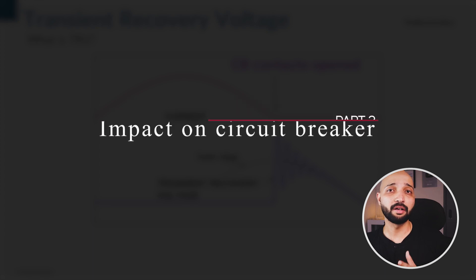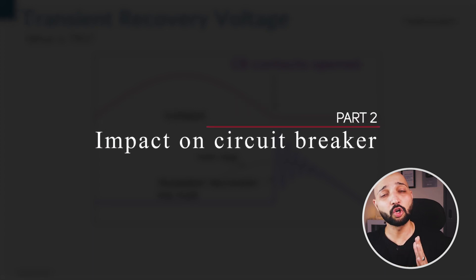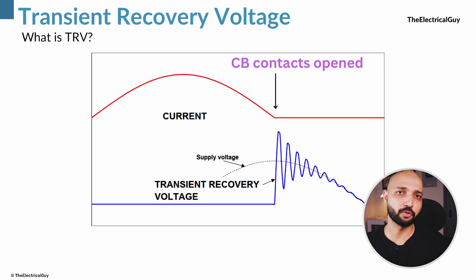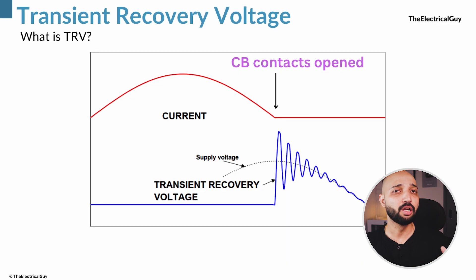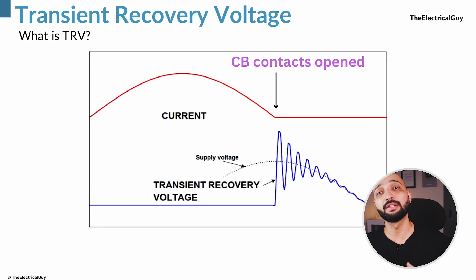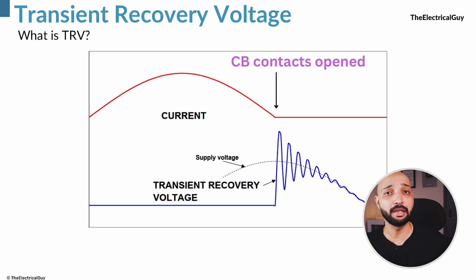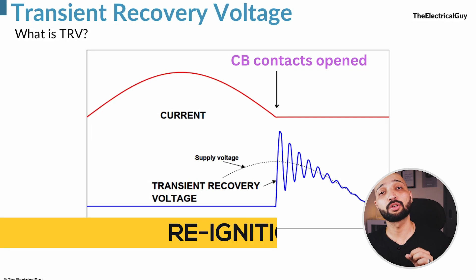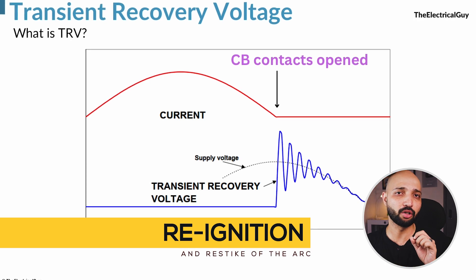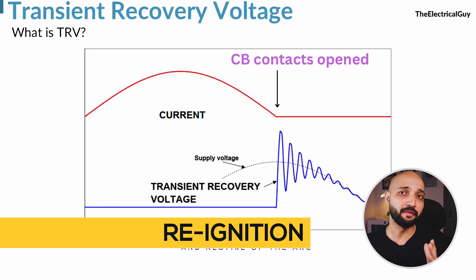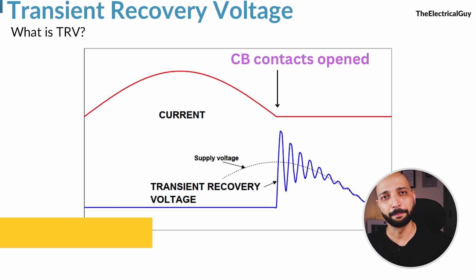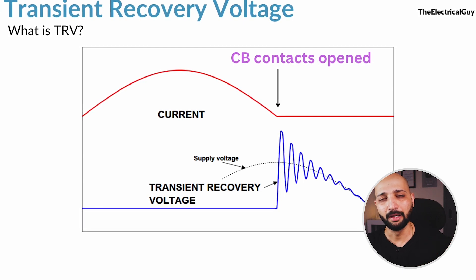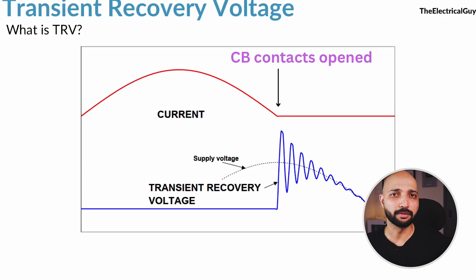As we have seen, transient recovery voltage appears across the contacts of the circuit breaker after fault interruption for a very short duration of time, and its value is very high compared to the normal system voltage. TRV can cause re-ignition and re-strike of the arc if the breaker fails to handle it, which will keep the fault running and can damage the system.